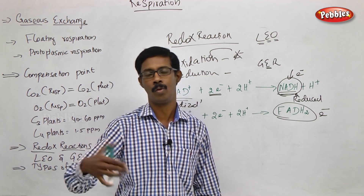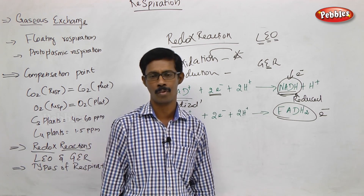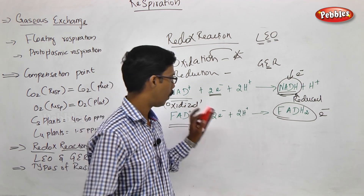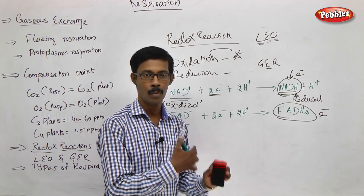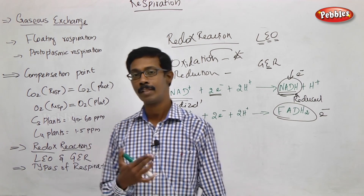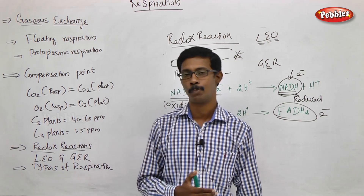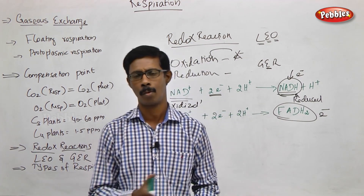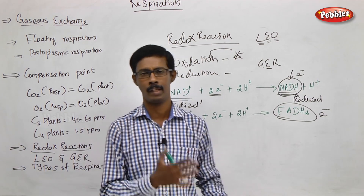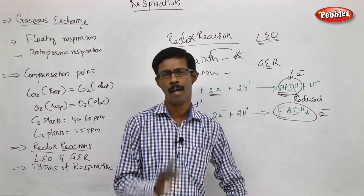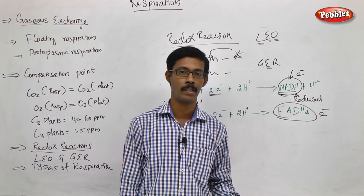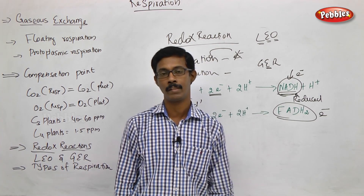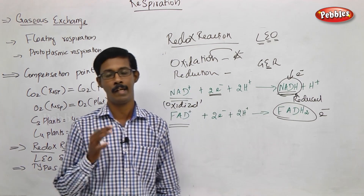The electron transport chain performs work to produce molecules called ATP. Now, what are the types of respiration? There are two types: aerobic respiration and anaerobic respiration. Aerobic respiration is oxygen dependent; anaerobic respiration is oxygen independent.